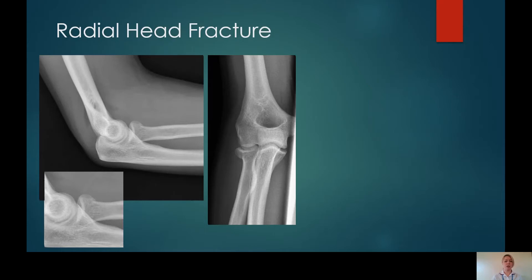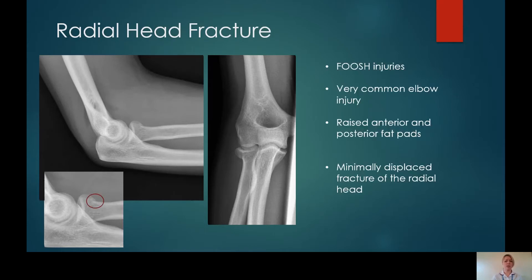Radial head fractures are commonly seen through A&E. They are caused by FOOSH injuries, and the most obvious thing you should be able to appreciate is the anterior and posterior joint effusion on the lateral elbow X-ray — so already you know that there will probably be an injury present even if you can't see it. The lateral elbow can be a quite subtle example of a radial head fracture, where there is a very subtle disruption of the bony cortex. It is a more obvious injury on the AP X-ray. They can be very, very subtle.